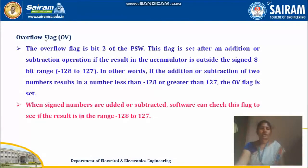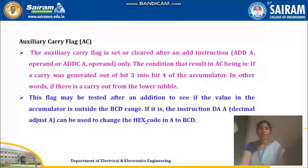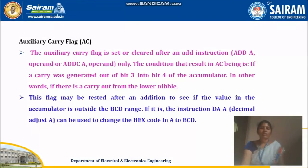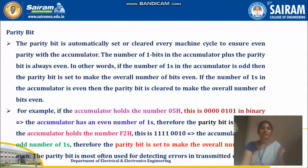Next is your overflow flag. The overflow flag is bit 2 of your PSW and it helps us to identify signed or unsigned numbers. When signed numbers are added or subtracted, software can check this flag to see if the result is in the range between -128 to 127. Auxiliary carry means from the 3rd bit to 4th bit — if a carry is generated, that is called your auxiliary carry, or we can say it is a carry out from the lower nibble. A nibble is 4 bits, so if any carry is forwarded from the lower nibble, it is called your auxiliary carry. This is the general introduction of your program status word.